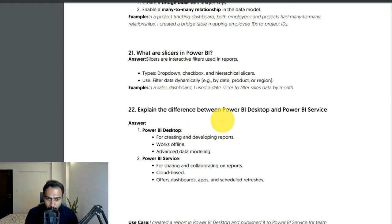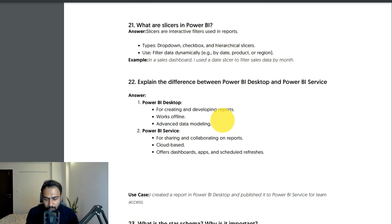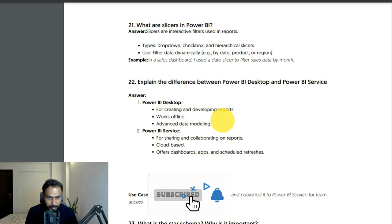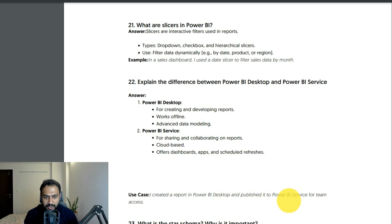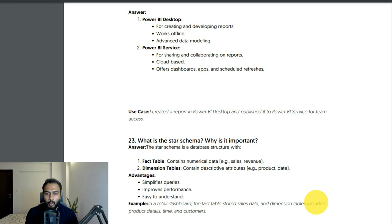Difference between Power BI Desktop and Power BI Service: Power BI Desktop is used for creating and developing reports, works offline, and supports advanced data modeling — data modeling cannot be done in Power BI Service, which is an important distinction. Power BI Service is for sharing and collaboration, is cloud-based, and offers dashboards, apps, and scheduled refreshes — scheduled refreshes can only be done through Power BI Service, though manual refresh can be done in Desktop. Use case: I created a report in Power BI Desktop and published it to Power BI Service for team access and collaboration.